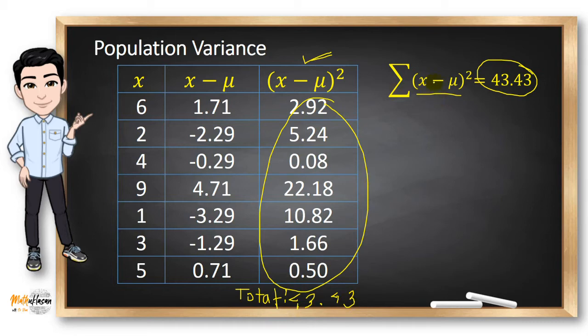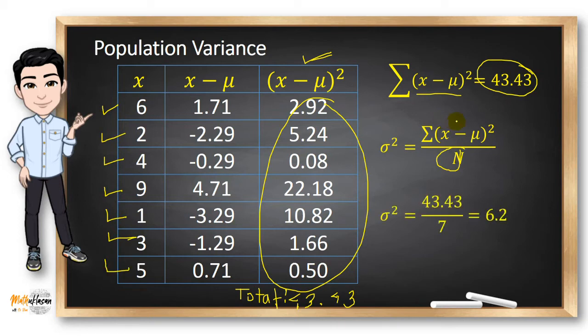After getting the summation of (x - μ)², we just need to divide it to n now for us to get σ². n, as we all know, is equal to 7 because we have 7 in the dataset. So 43.43 divided by 7 will give us the answer of 6.2. The variance for this dataset is 6.2.